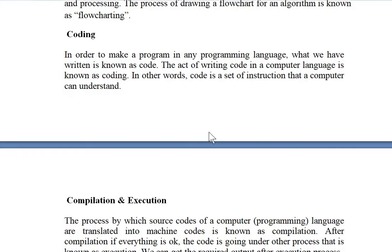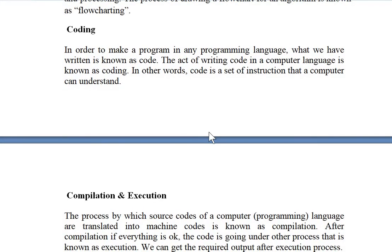Next is coding. The set of instructions that we write in any language is called coding. In order to make a program in any programming language, what we have written is known as code. The act of writing code in a computer language is known as coding. In other words, code is a set of instructions that a computer can understand — for example, writing C code to add or subtract two numbers.